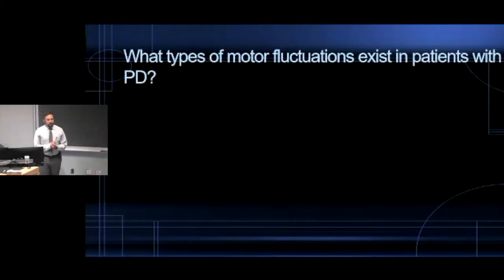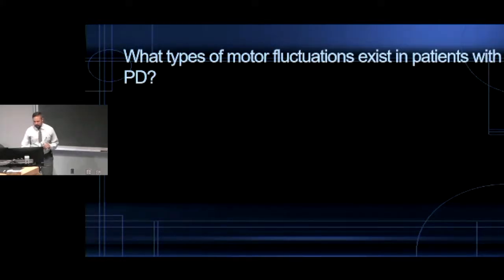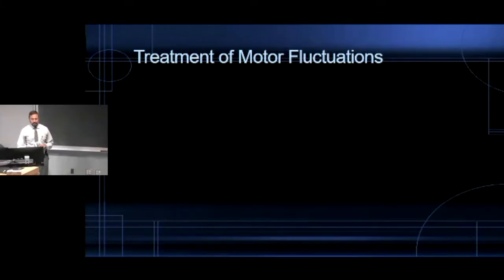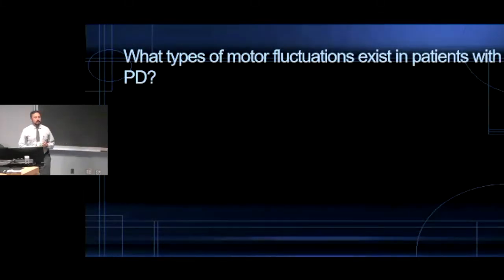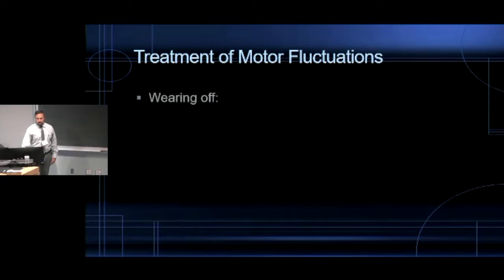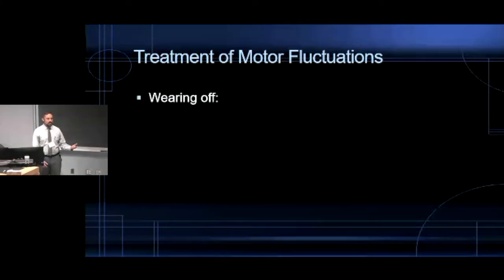Regarding motor fluctuations beyond dyskinesia: freezing is one. The ones we talk about are wearing off — patients are doing okay, walking around the unit, and then an hour later they're sitting there trembling and can't do anything. Wearing off can be end-of-dose wearing off, or it can be an unpredictable wearing off that happens suddenly, or sometimes a missed dose phenomenon where a dose just doesn't hit them.